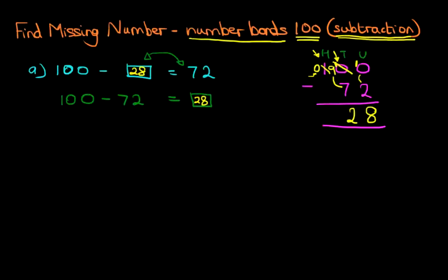Okay, let's use a slightly different method for our second example, where we've got 100 minus something equals 36. 100 minus something equals 36.